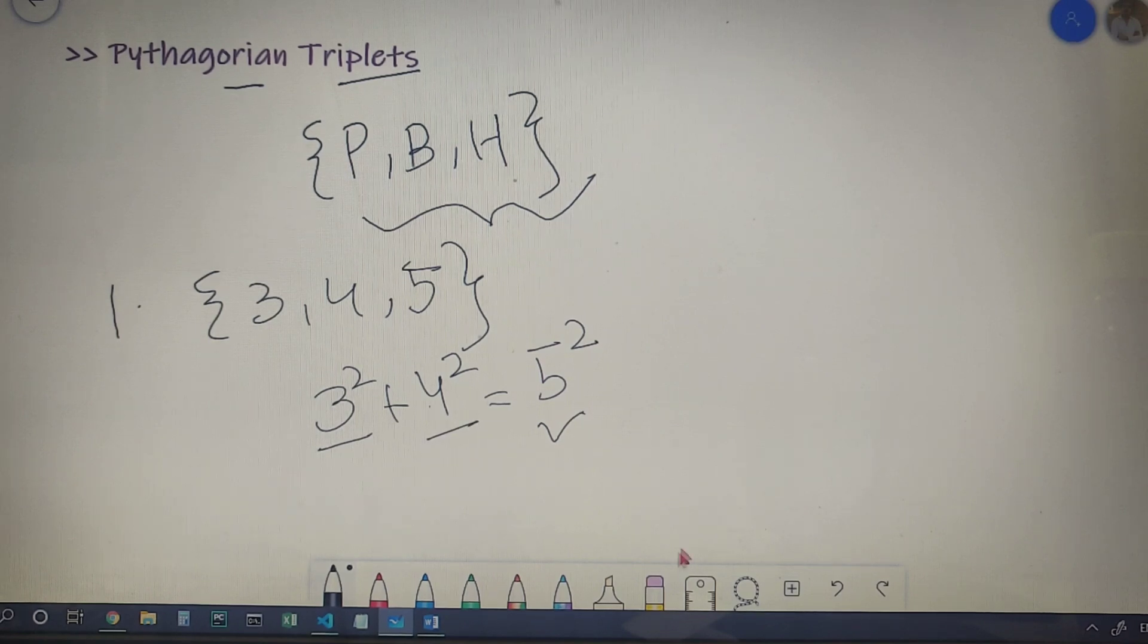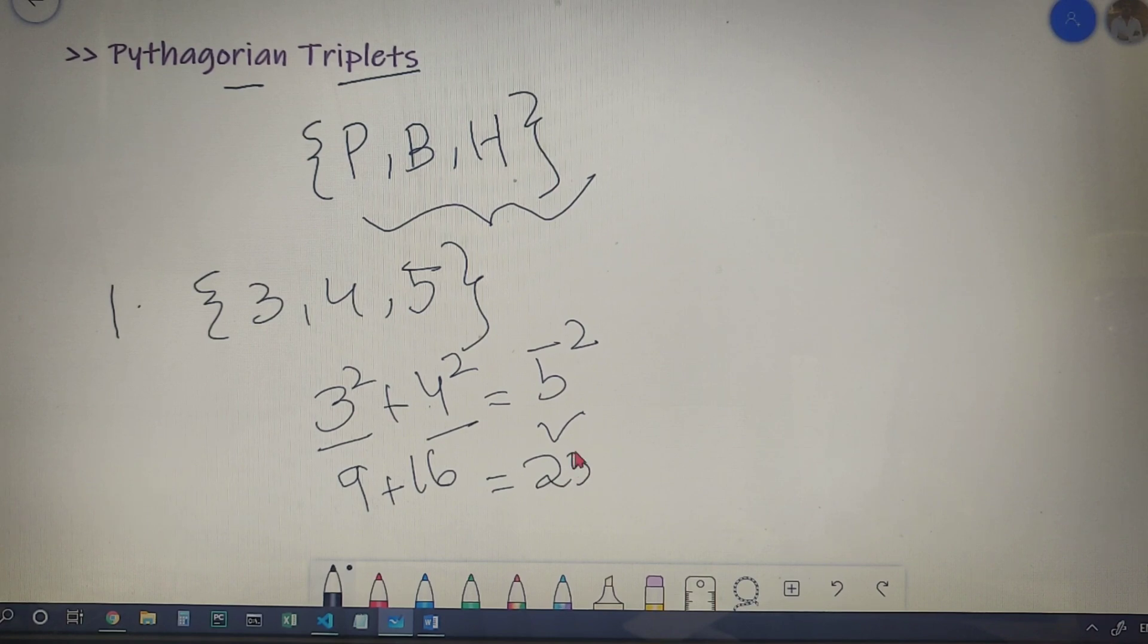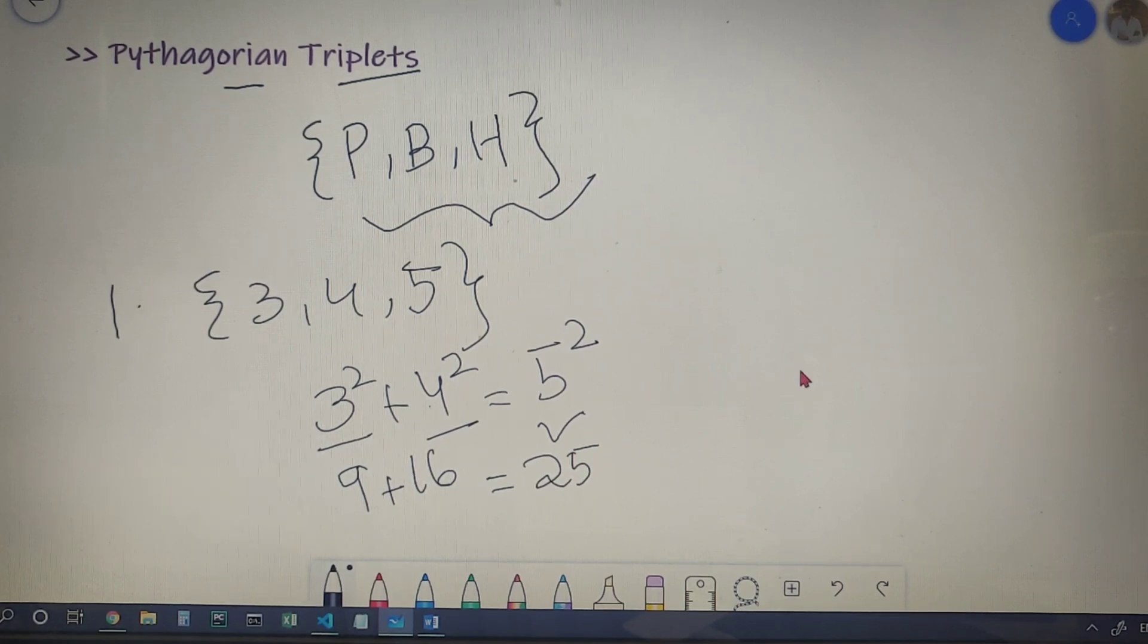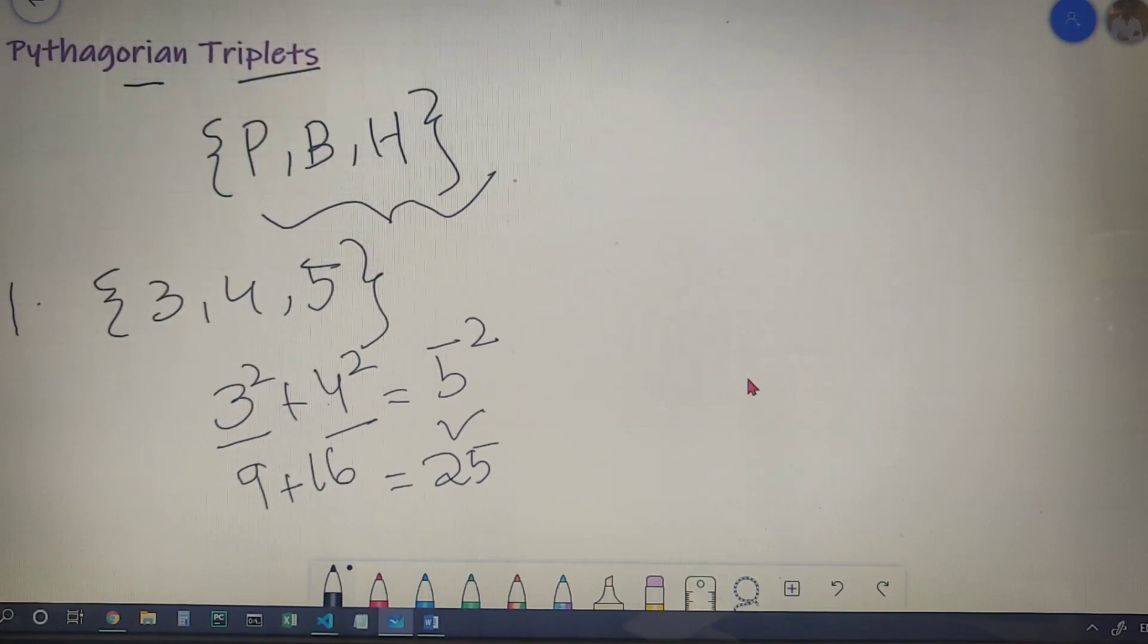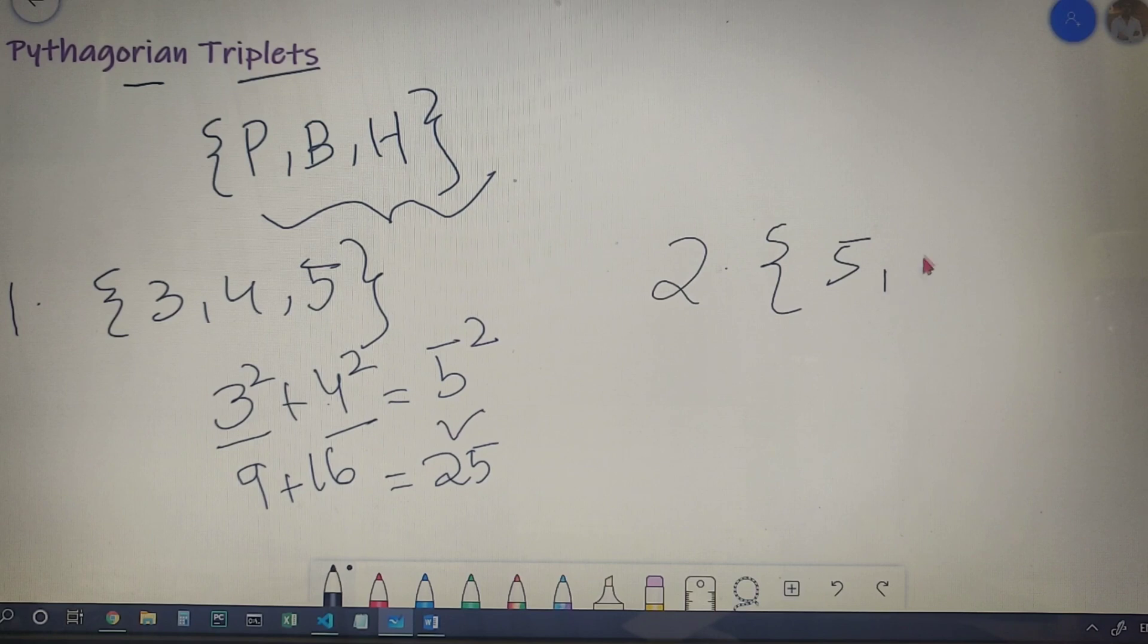What we finally got is 9 plus 16 is equal to 25. If you are unclear with this example, let's take another example. Another example of Pythagorean triplet is 5, 12, and 13.